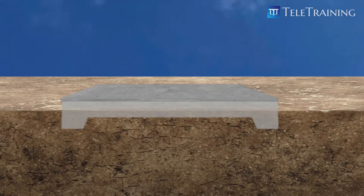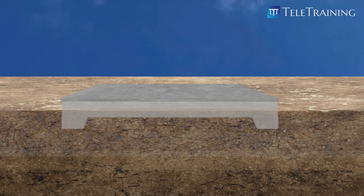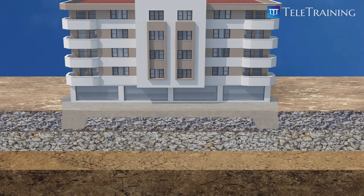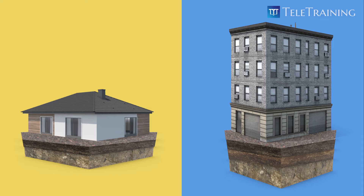Foundation materials refer to layers of soils under the slab on ground or pavement to support the applied loads. Depending on the magnitude of the loads, the number of foundation layers, materials, and thickness required could change.